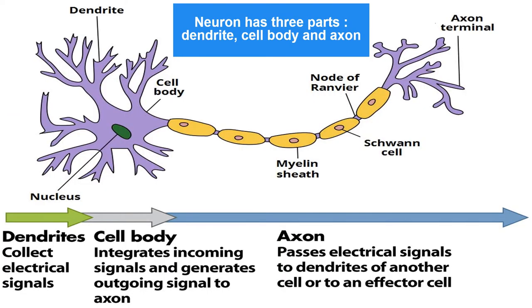A typical neuron consists of dendrites, the cell body, and an axon. Dendrites are responsible for responding to stimuli and receive incoming impulses towards the cell body. The axons are responsible for transmitting impulses from the cell body. The cell body produces all the proteins and contains specialized organelles such as the nucleus, granules, and Nissl bodies.